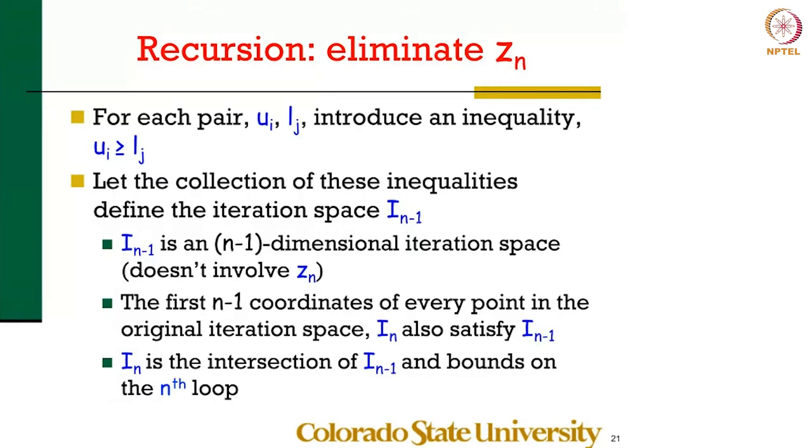We are still always talking about the set of points for the correctness argument in this n-dimensional space. All you are saying is that on the innermost dimension there are no constraints, so it can be arbitrarily large, no lower bound, no upper bound, because that has already been generated from the previous slide. So I_n is the intersection of I_{n-1} and the bounds on the n-th loop.